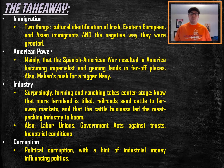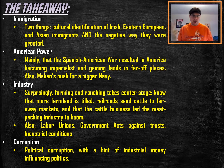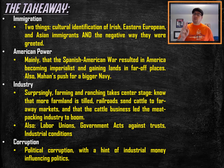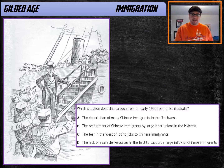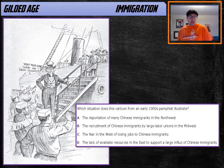Today we're going to take a look at immigration in the Gilded Age, and it really boils down to two areas. You need to know the cultural identification of the various immigrant groups — Irish, Eastern European, and Asian immigrants — and you need to know that they were treated negatively overall, and why. Those are the two things about immigration this test has focused on in the past. Here's an example using a political cartoon.